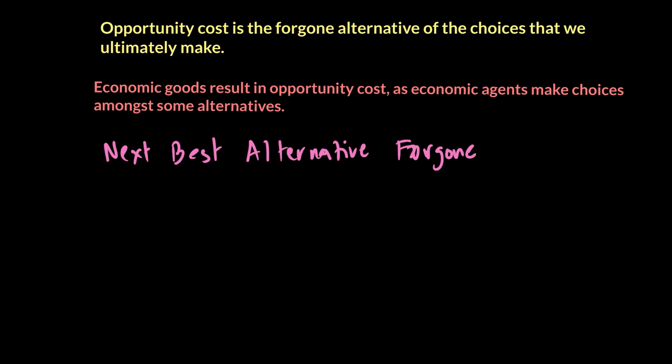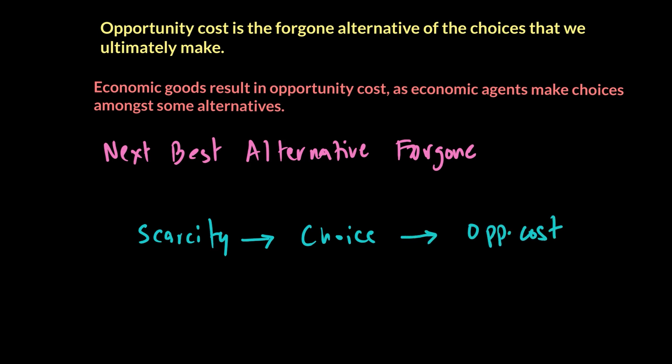The idea is that when you're looking at your options, weighing your choices, and considering opportunity cost — the next best alternatives — you are hopefully making a decision that fully satisfies your wants. This is what we call economic decision-making. Scarcity leads to choice, and choice ultimately leads to opportunity cost, which is the next best alternative forgone — the choice you decide not to take because you prefer something else.